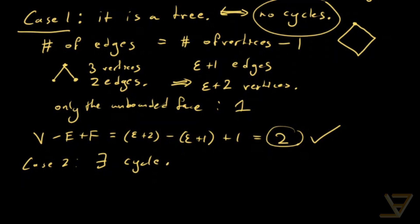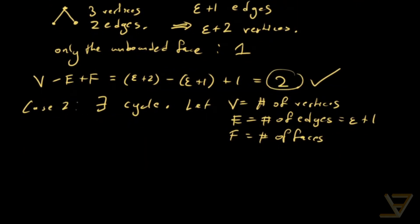So what we'll do is that we'll say let V equal number of vertices of the graph, E equal number of edges, which is epsilon plus one, and F equals the number of faces in this planar embedding. Because it can depend on the particular embedding that we have in the plane of this graph.